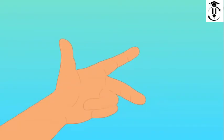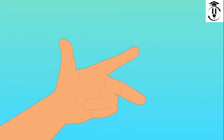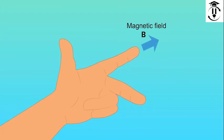This rule states that if we stretch the index finger, middle finger, and thumb of the left hand such that all three are mutually perpendicular to each other, then the index finger will point towards the direction of the magnetic field. The middle finger will point towards the direction of the current, and the thumb will show the direction of the force.